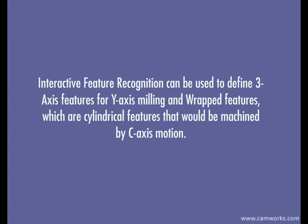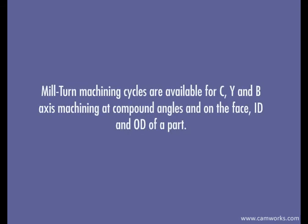Interactive feature recognition can be used to define three-axis features for Y-axis milling and wrapped features, which are cylindrical features that would be machined by C-axis motion. MillTurn machining cycles are available for C-, Y-, and B-axis machining at compound angles and on the face, ID, and OD of a part.